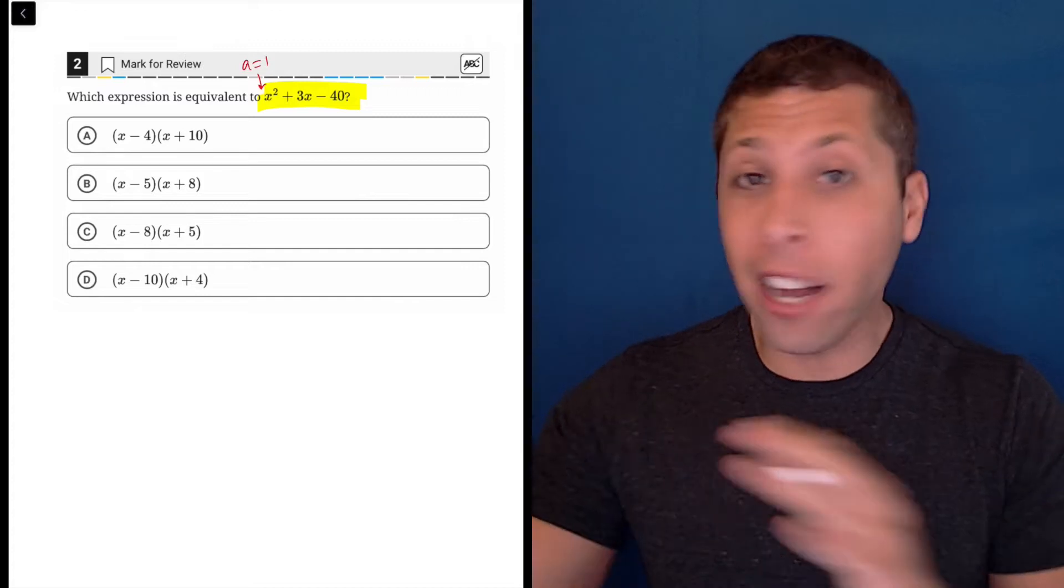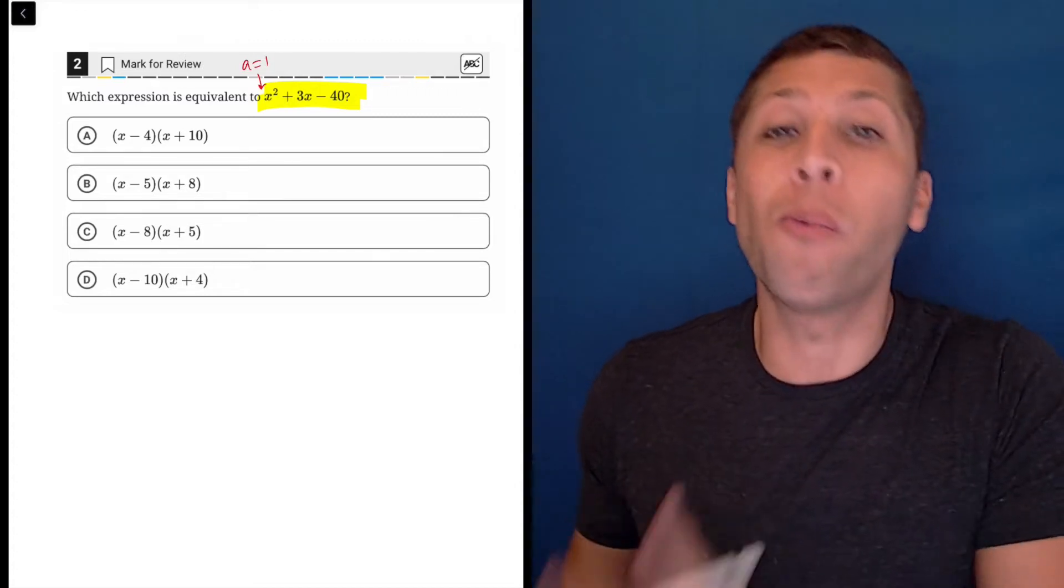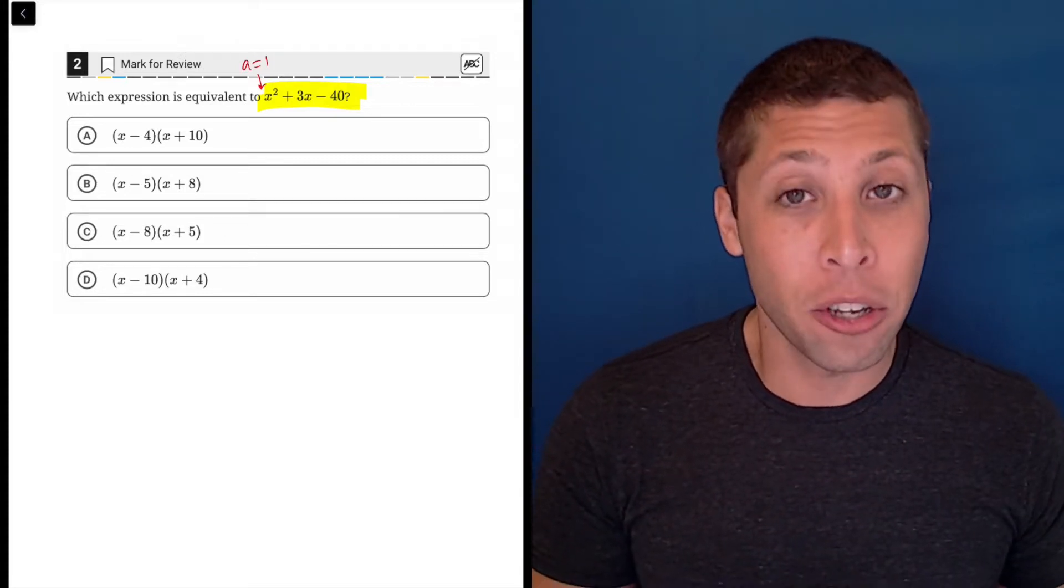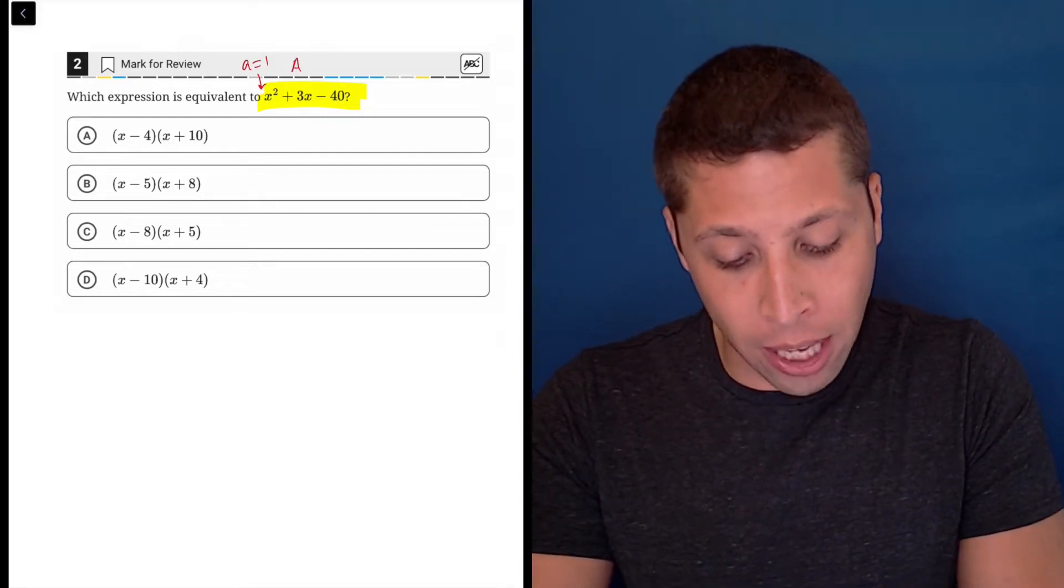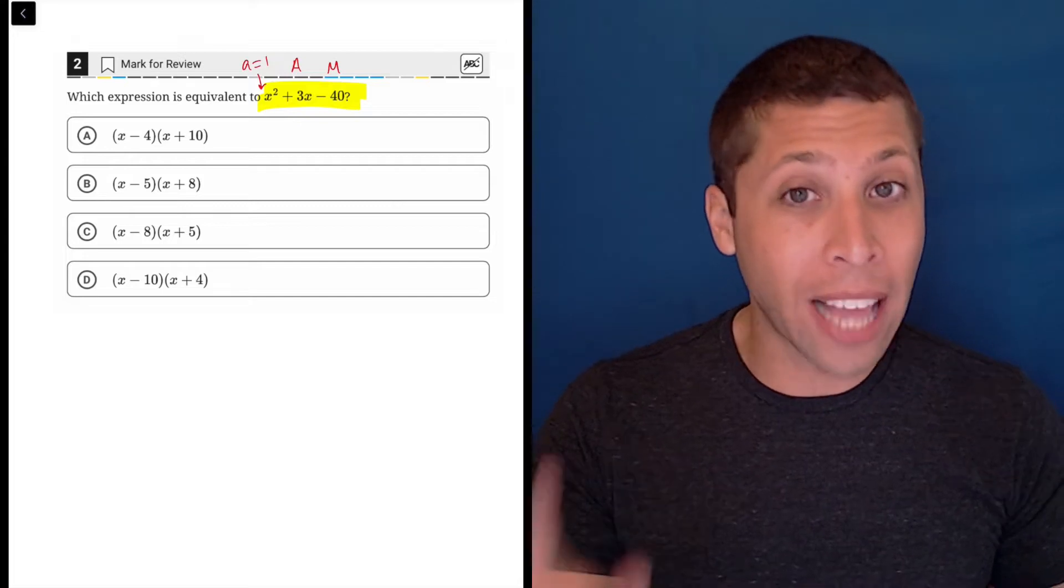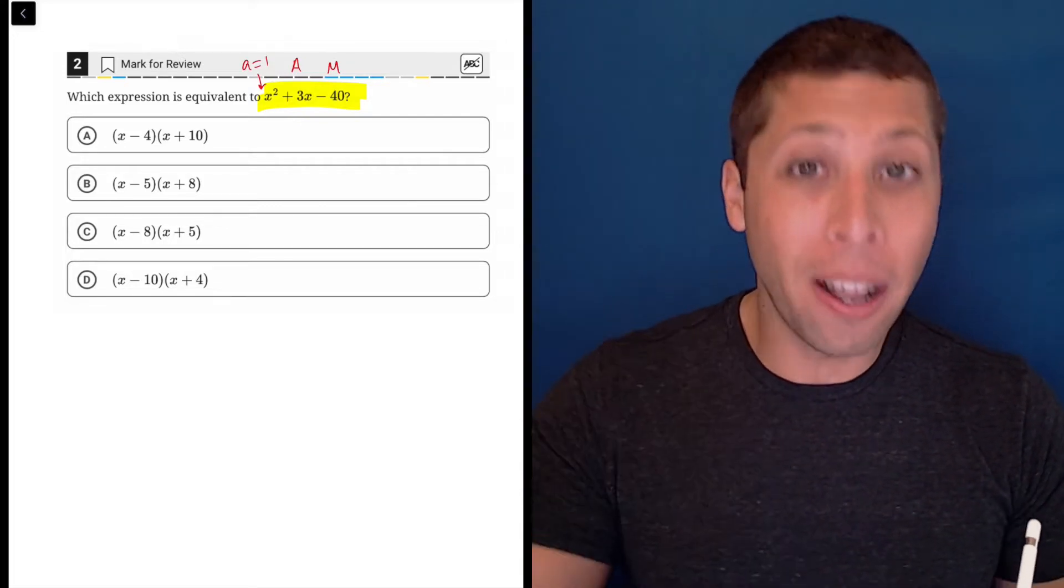That's what we want. Any other number there and things get more complicated, but most of the time it will be one. So that's why we don't normally think about this. But it's important for the type of factoring we're about to do, which is now we need numbers that add to three and multiply to negative 40. So if you get that confused, just look at the letters that I wrote above those two pieces. A and M.